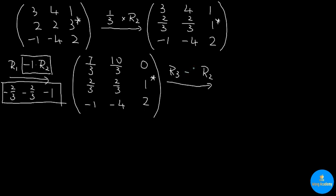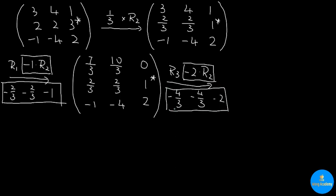To turn a 2 into a zero, we do minus 2 times R2 as an auxiliary row: negative 2 times 2 over 3 gives negative 4 over 3, negative 4 over 3, and negative 2 times 1 is negative 2. Adding this auxiliary row to R3 gives: negative 4 over 3 plus negative 1 is negative 7 over 3, negative 4 over 3 plus negative 4 is negative 16 over 3, and negative 2 plus 2 is 0.